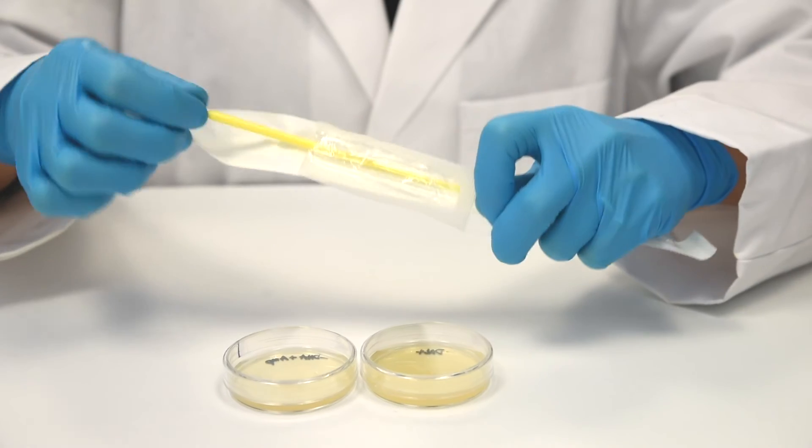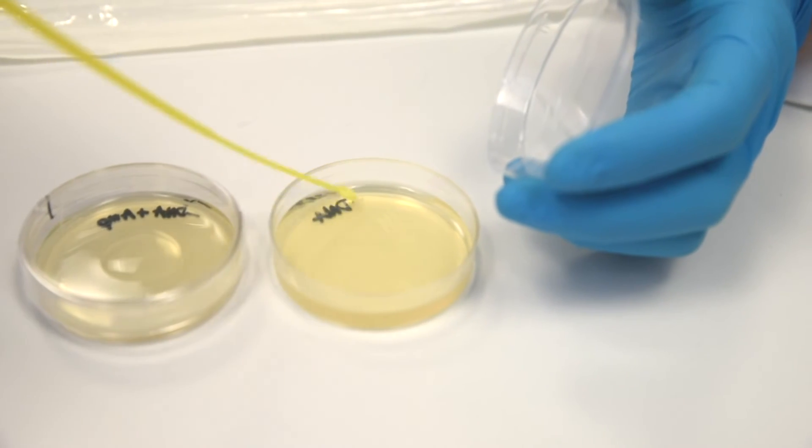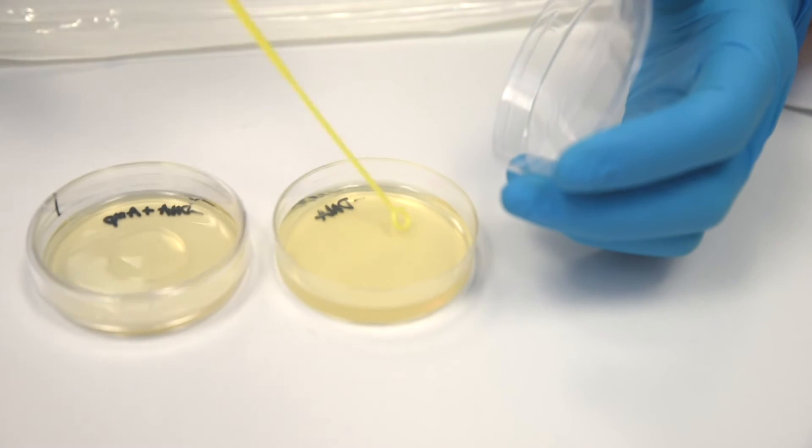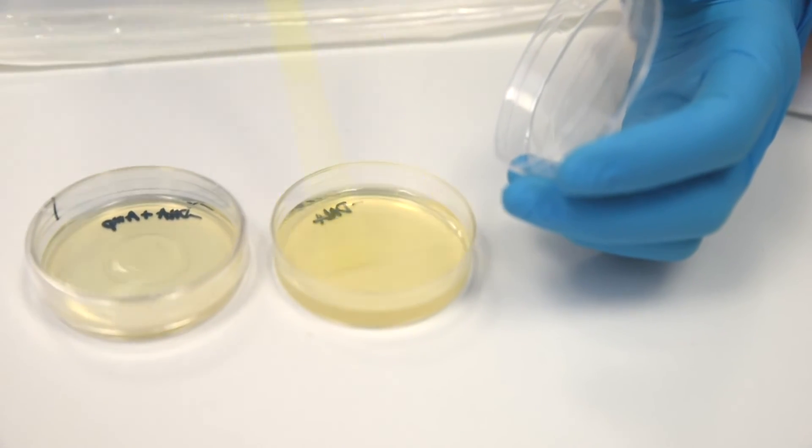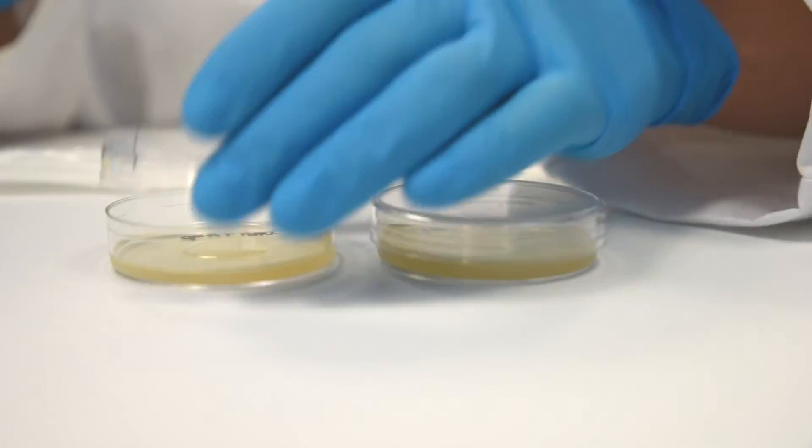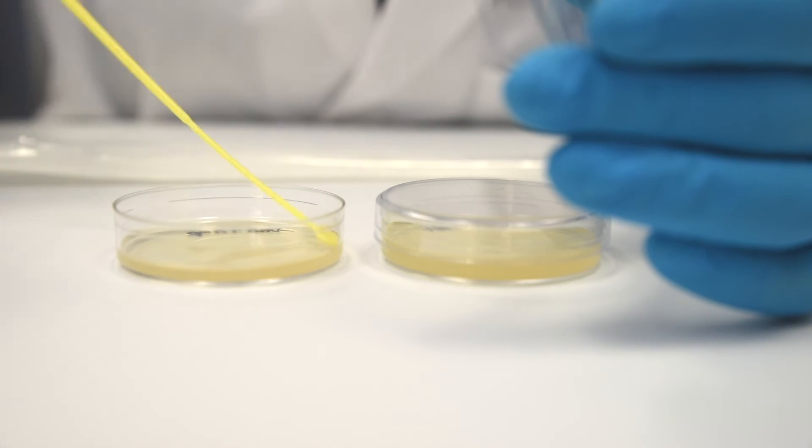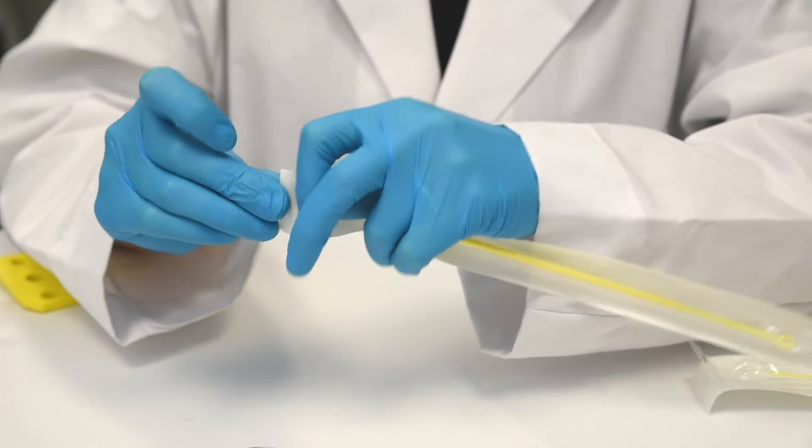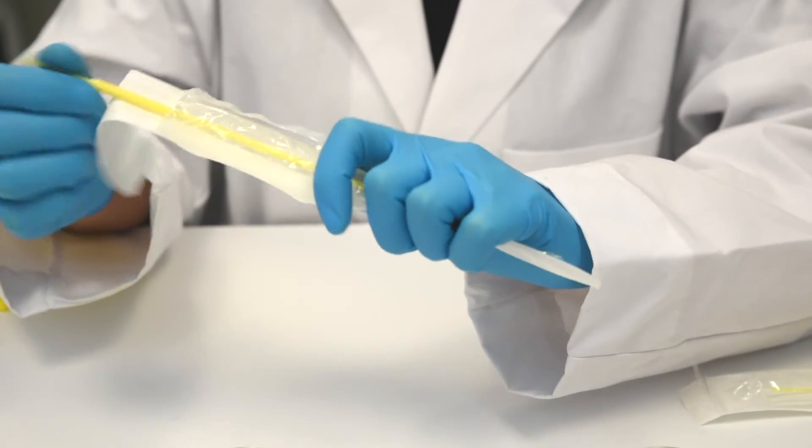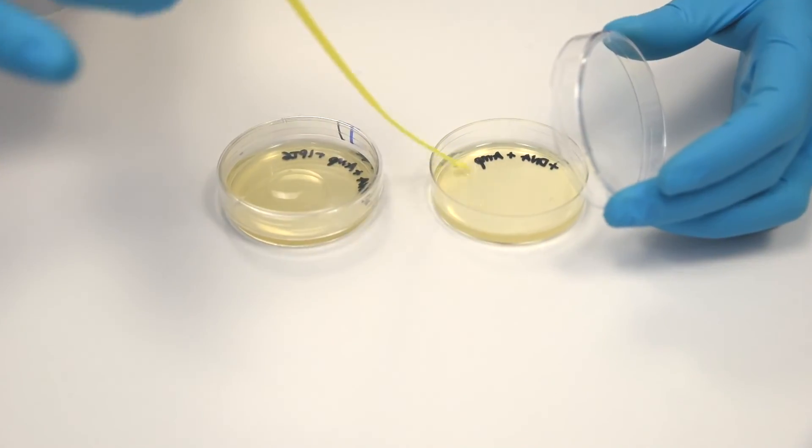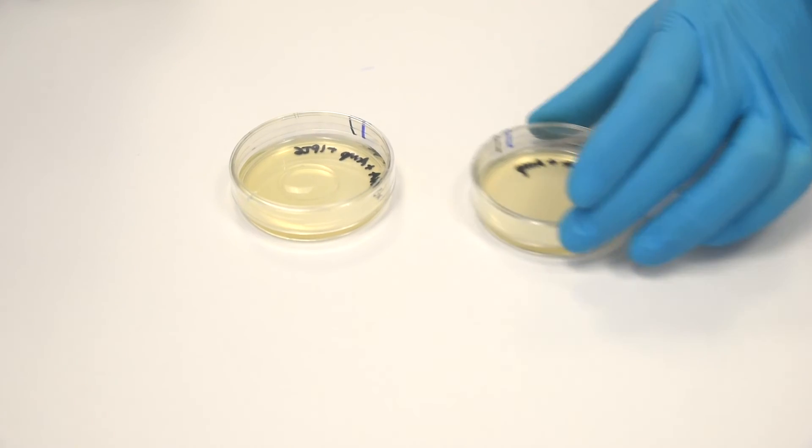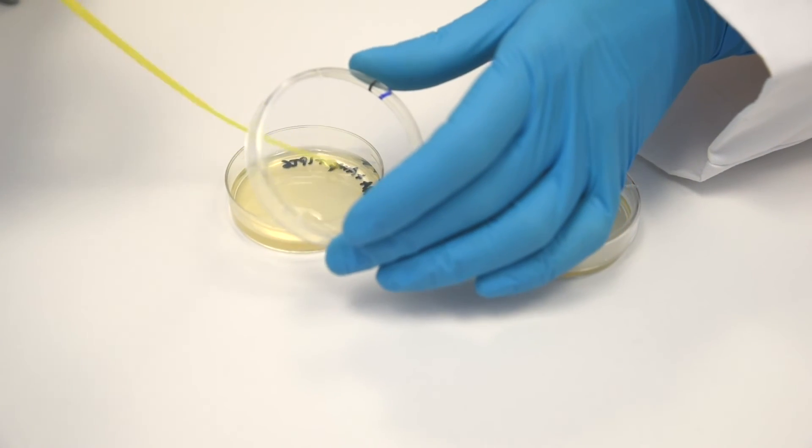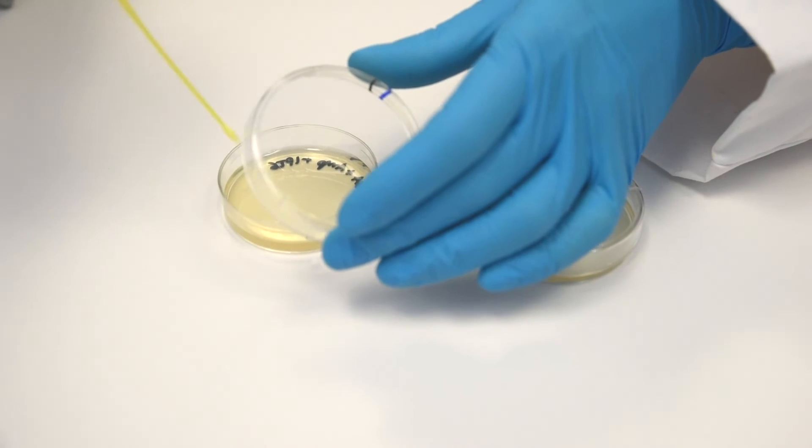Step 15. Spread the cells over the entire plate using an inoculating loop. Use one sterile loop to spread both minus DNA samples. Change to a fresh loop before spreading the plus DNA samples. Make sure the cells have been spread over the entire surface of the plate. Cover the plates and wait 5 minutes for the cell suspension to be absorbed by the agar.